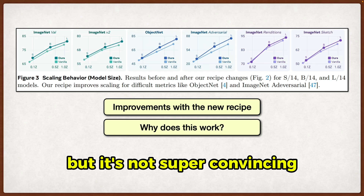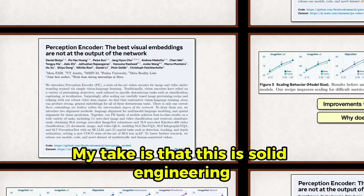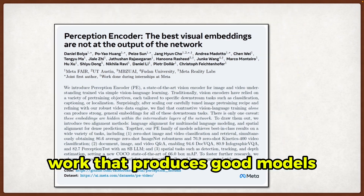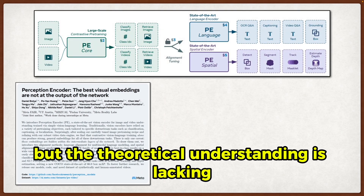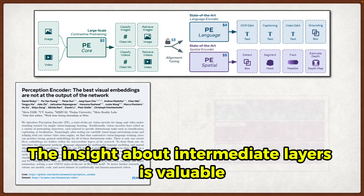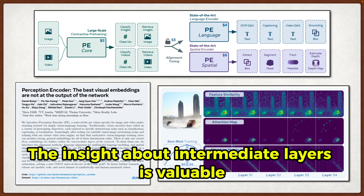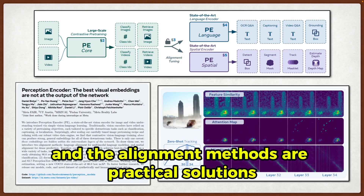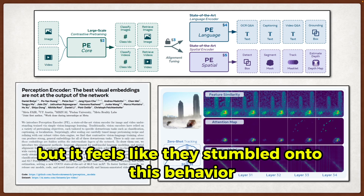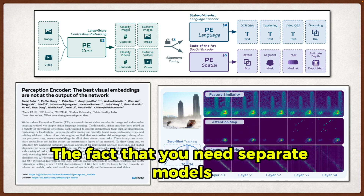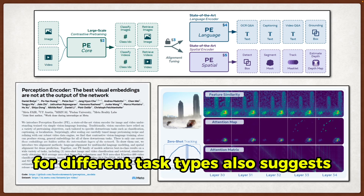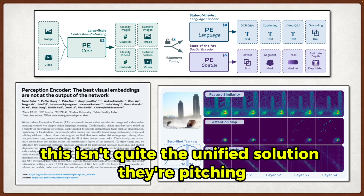They kind of hand wave this by saying their training modifications help, but it's not super convincing. My take is that this is solid engineering work that produces good models, but the theoretical understanding is lacking. The insight about intermediate layers is valuable, and the alignment methods are practical solutions, but it feels like they stumbled onto this behavior rather than designing for it. The fact that you need separate models for different task types also suggests this isn't quite the unified solution they are pitching.